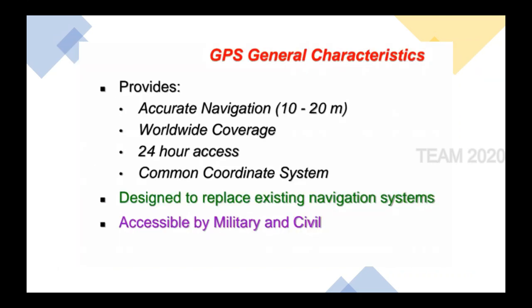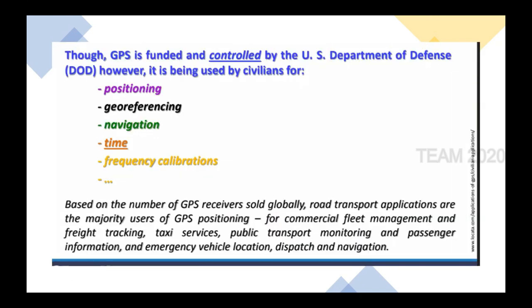For example, when you book a taxi or cab, you can see on a map how the vehicle is moving and know within how many minutes the cab will reach the pickup point. All this information can be obtained with the help of GPS or any global navigation system.